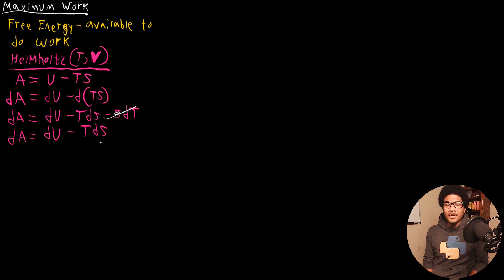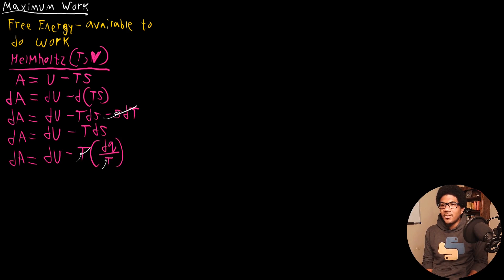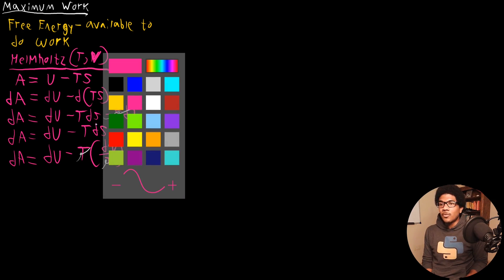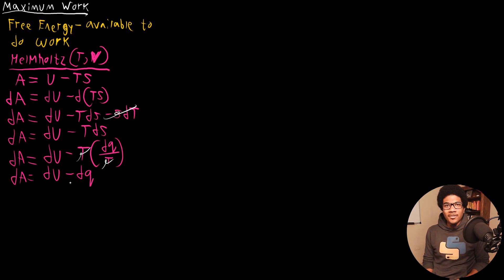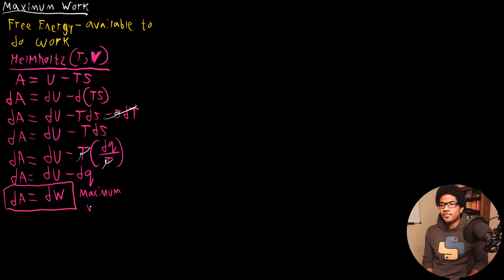We can substitute the definition for entropy in and see what we get. So we have DA equal to DU minus T times (DQ over T). Since we have temperature on the outside and in the denominator, those two cancel out. So we're left with DA equal to DU minus DQ. From the first law of thermodynamics, DU minus DQ is just the work. So DA is equal to DW — this is equal to your maximum work. The Helmholtz free energy is the maximum amount of work that a system can do.